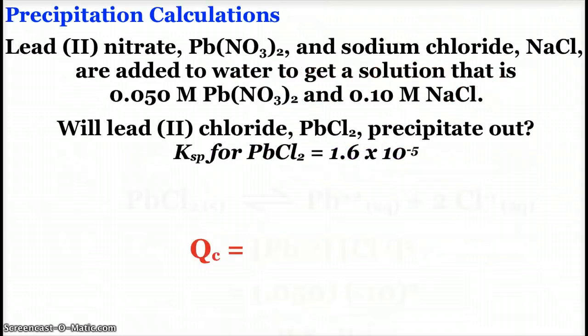So if I have lead 2 nitrate and sodium chloride, and I add them to water so that I get a solution that is 0.05 molar lead nitrate and 0.1 molar sodium chloride, will lead 2 chloride precipitate out? Now, I'm not worried about sodium nitrate, because, of course, sodium nitrate is completely soluble, so we would not have any precipitation of that salt whatsoever.